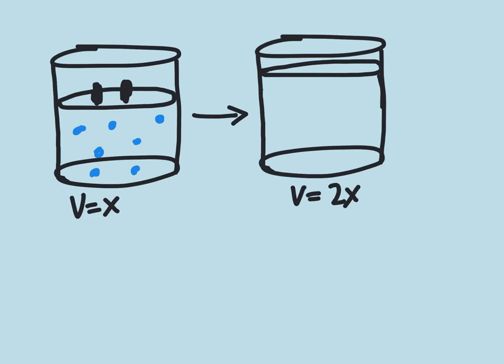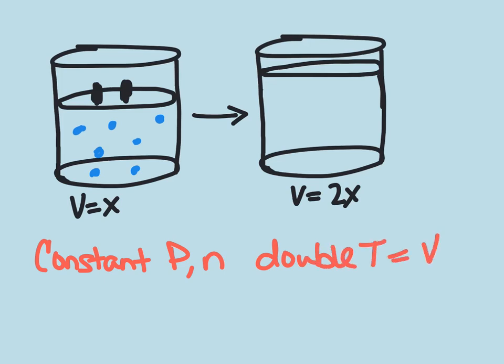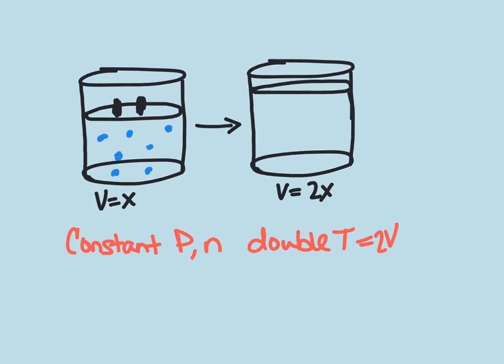So the first thing that you could do in order to do this is if you have a constant pressure and number of moles and you double the temperature, then you will double your volume as well. The volume of the gas will double.